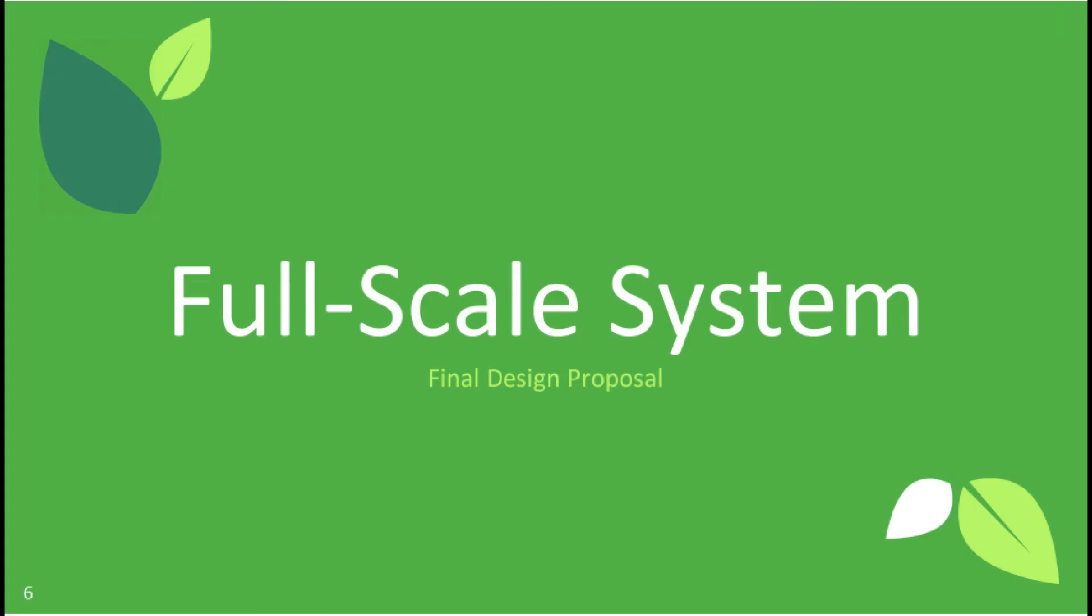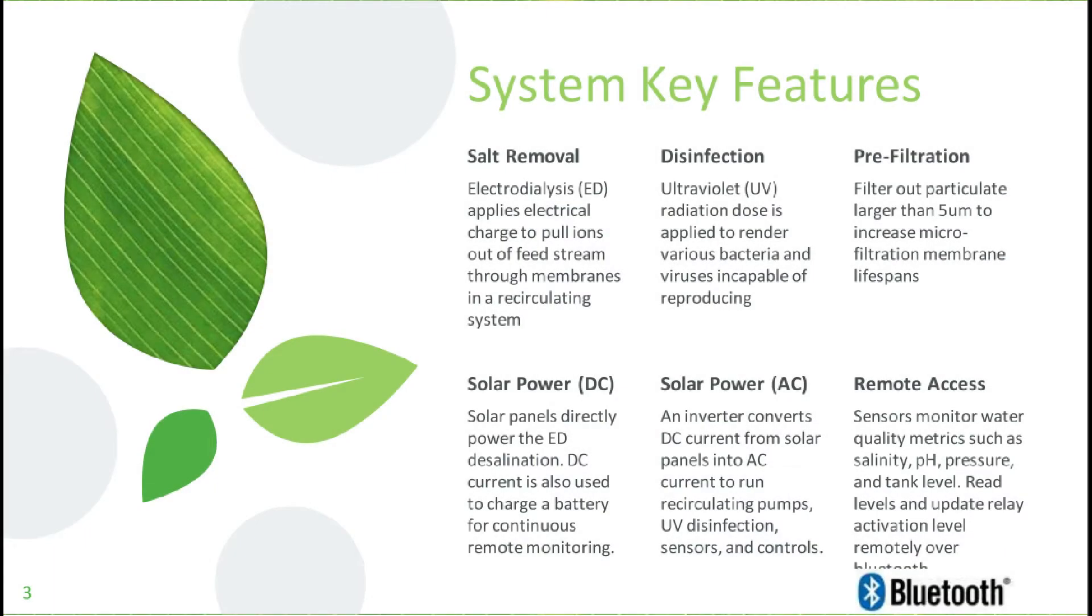Our full-scale system design follows the same principles as our pilot system. We wanted our system to be fairly flexible. To keep things economical and scalable, we decided to plan for a 2,000 gallon storage tank. The idea is to be able to treat the water through the system through the peak sunlight hours in the day to utilize all of the solar power directly.